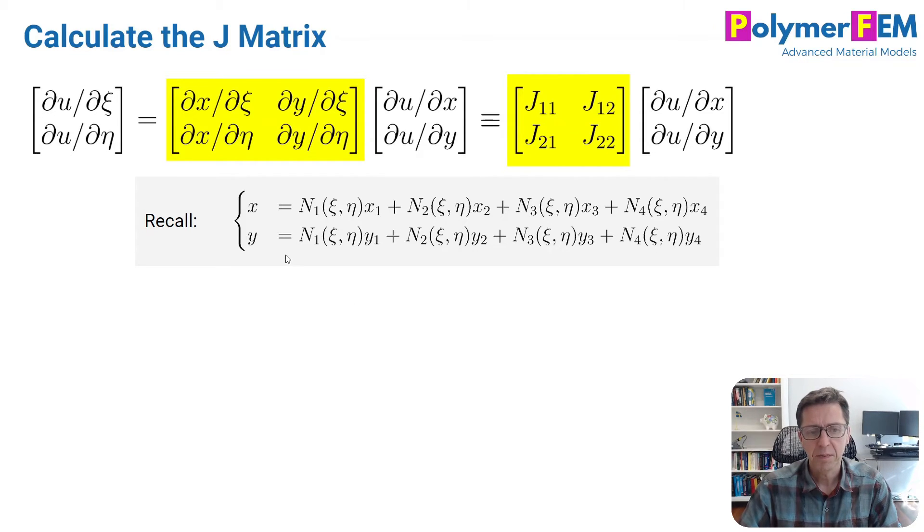We need to first recall how the shape functions behave. So the displacement of any point in the element is given by the shape function N1 times x1, which is the x coordinate of node 1, node 2, node 3, and node 4. So this is how the shape functions are used to calculate a position for a given psi and eta component. And we need that because we want to take the partial derivatives of x with respect to these psi and eta.